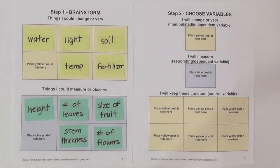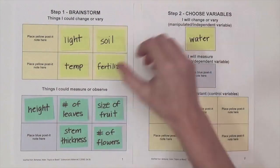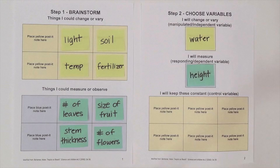The variable that we will choose to change is the amount of water — this will be our independent variable. We'll choose to measure the plant height, which will be our dependent variable.